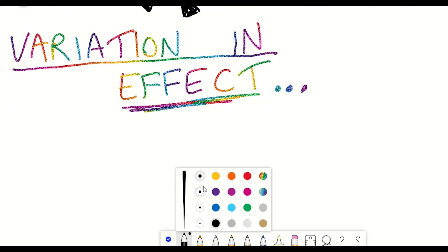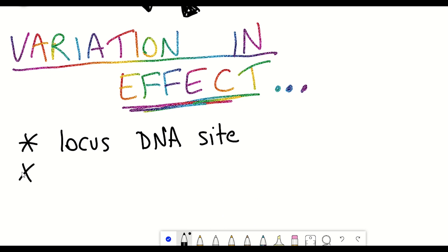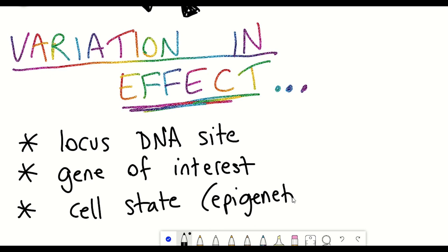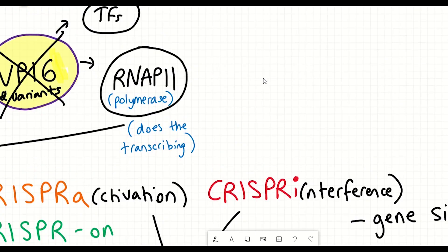And so this could be due to the locus site, the gene of interest, or the cell state. And understanding these different differences and why there seems to be so much variability will really help the use of these tools in the future.